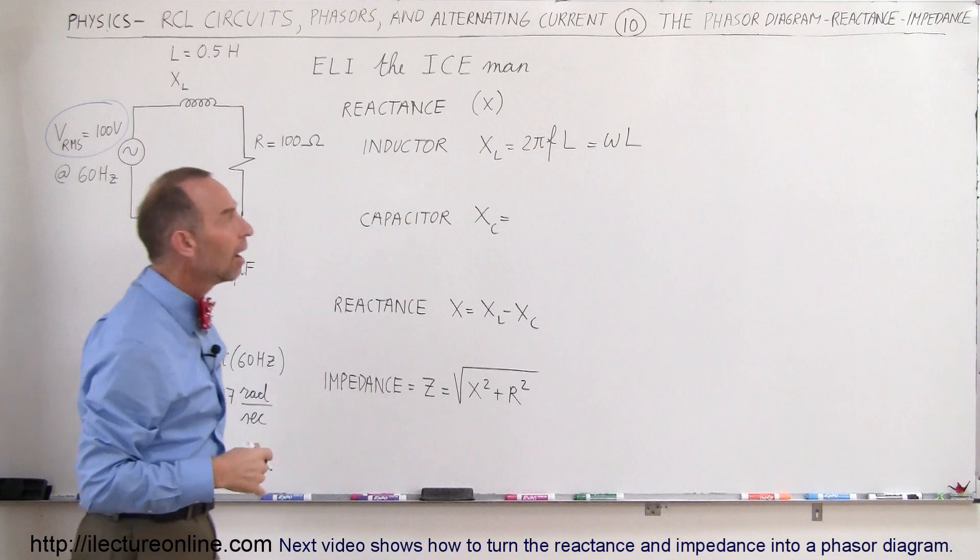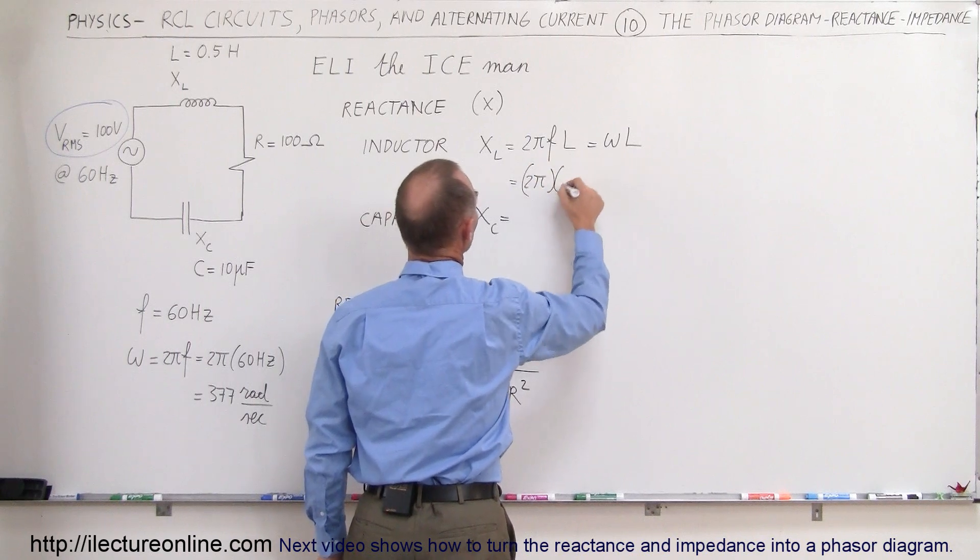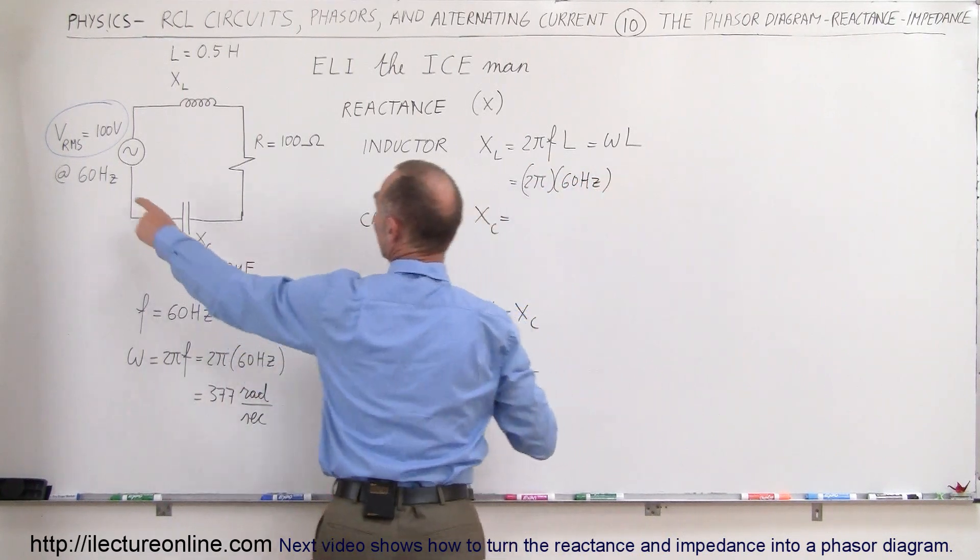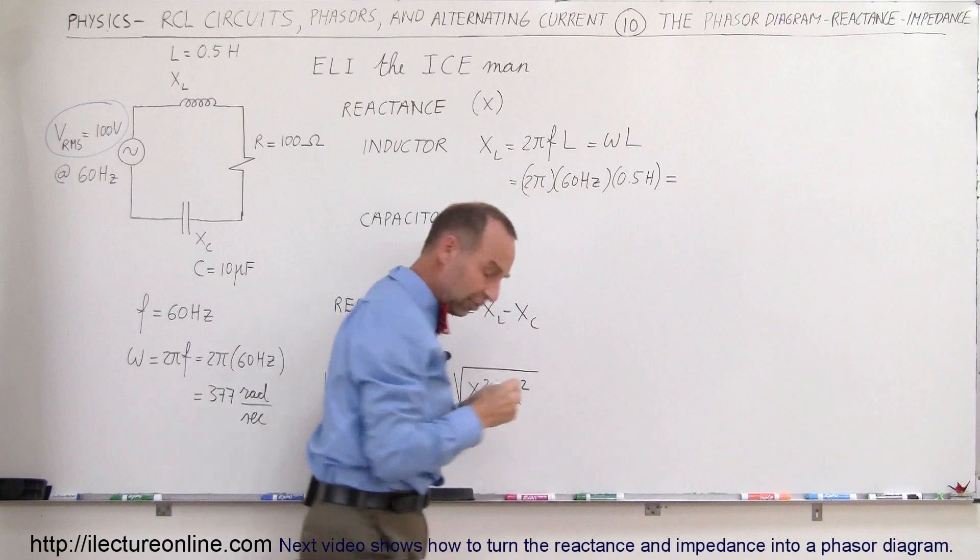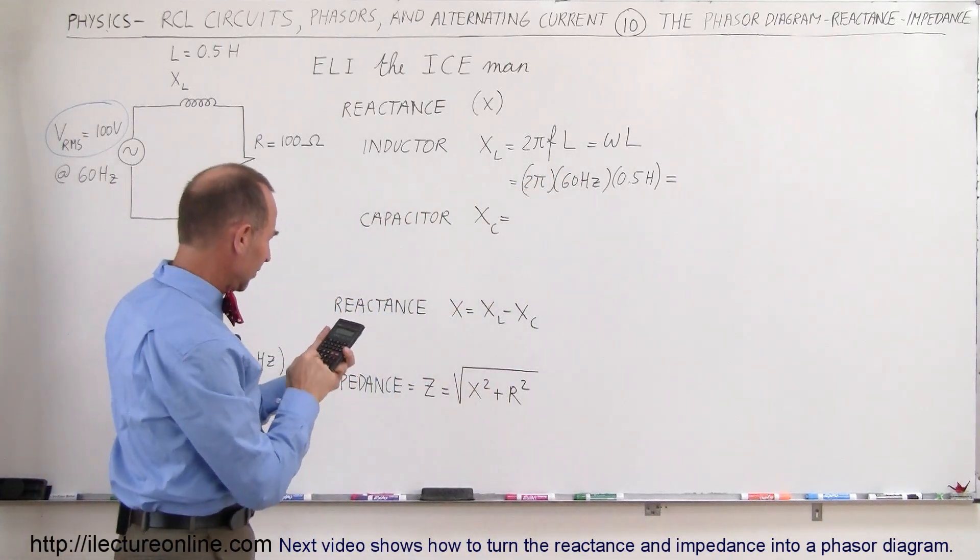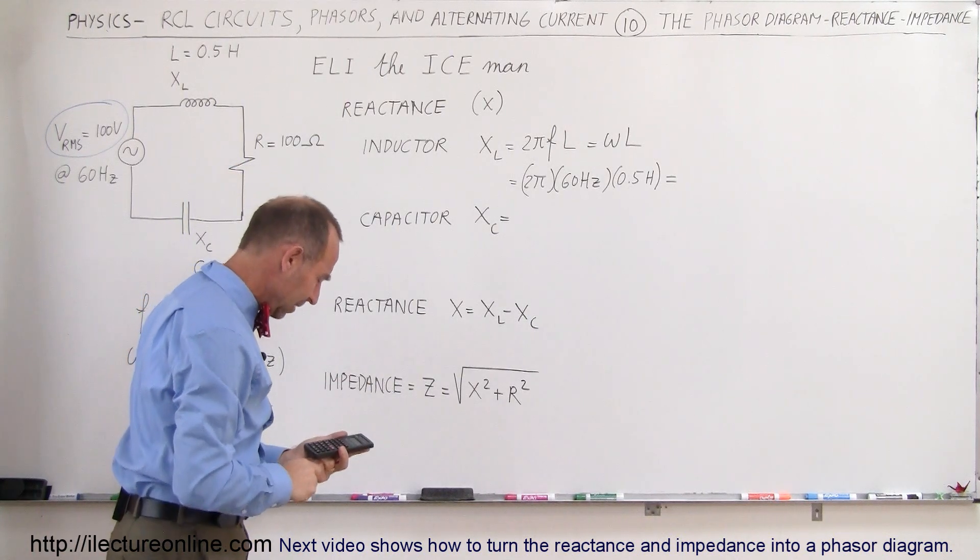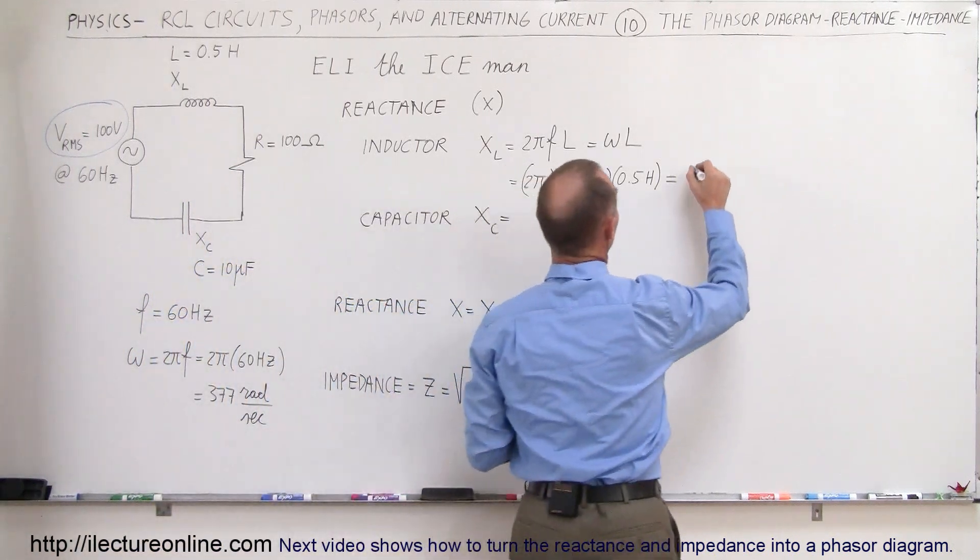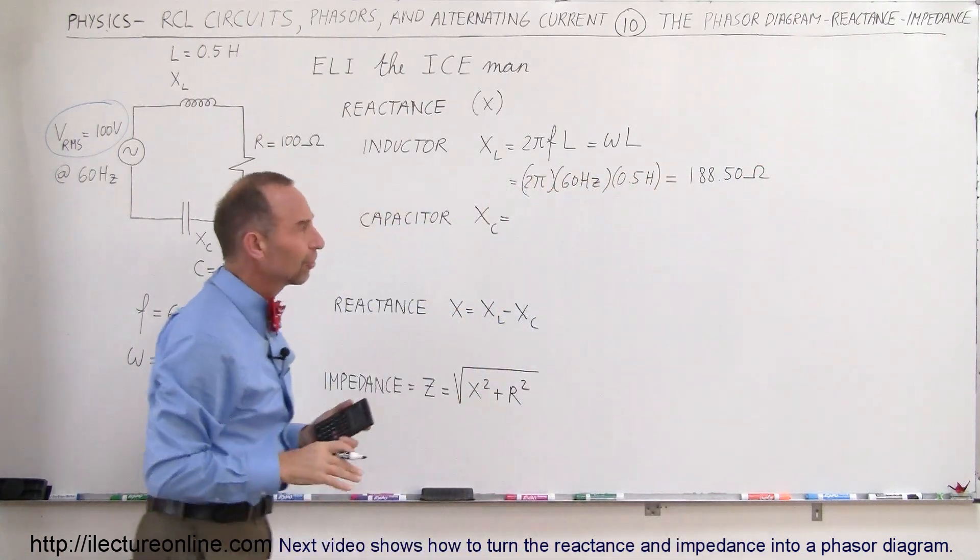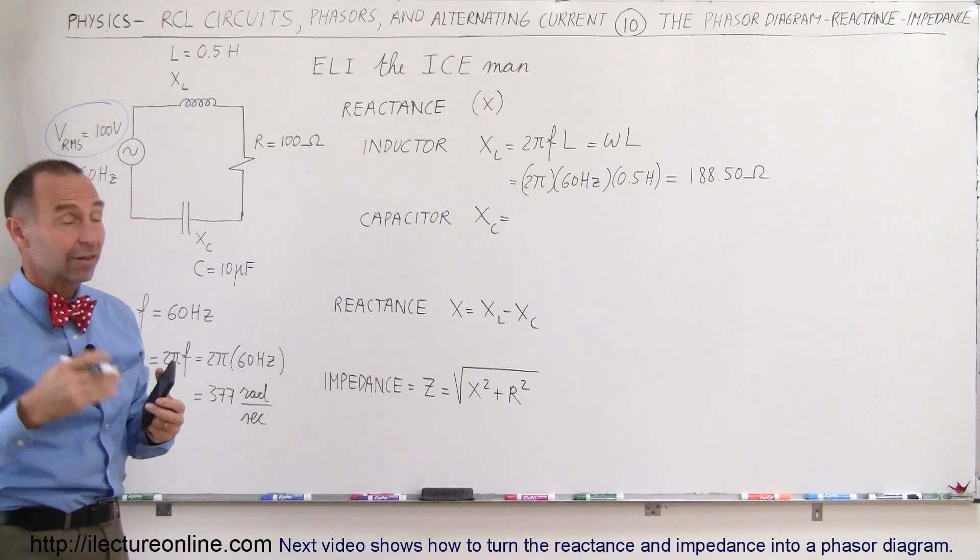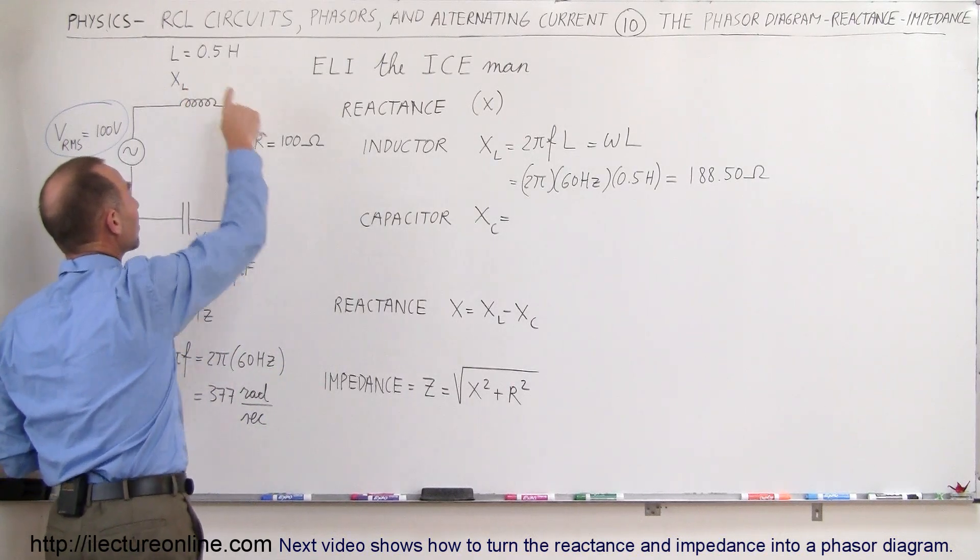So in this case, in our example, that would be 2π times 60 hertz times the inductance, which would be 0.5 henrys. And so that gives us an inductive reactance of 2 times π times 60 times 0.5. That gives us 188.50 ohms. I'm going to add a few extra decimal places so we can do some calculations later a bit more accurately. You can see here that the opposition to the current for an inductor is almost twice the opposition for the resistor.